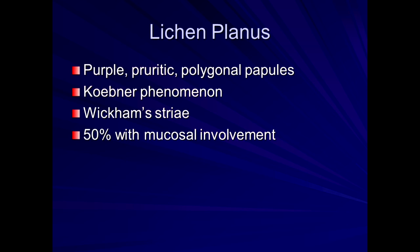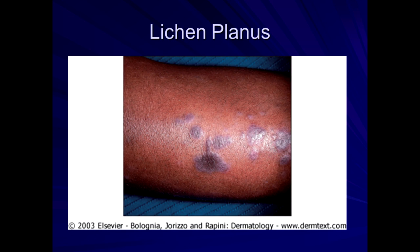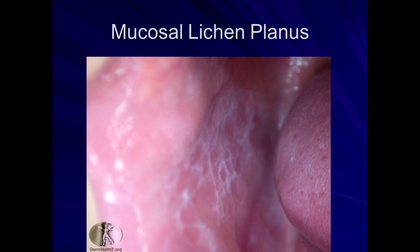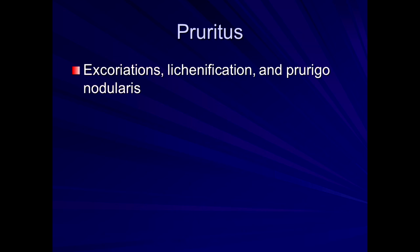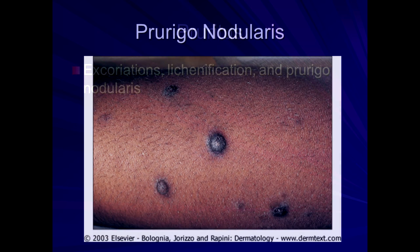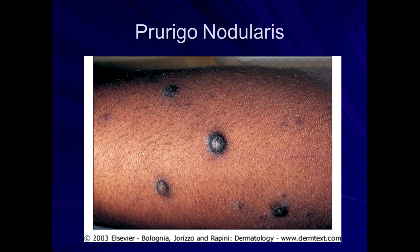Lichen planus is a very itchy condition where you get these purple-like bumps — flat-topped, puritic, purple-like lesions. Fifty percent have findings in the mouth. When I teach residents I say: when you see something on the skin, you have to look in the mouth — just like with psoriasis, you need to look at the scalp and nails too. Lichen planus also presents with Wickham's striae — lacy whitish patches inside the mouth. These patients are severely itchy. Prurigo nodularis is a nonspecific condition where cutaneous nerves become excited, causing severe itch, often on the arms and legs, and is not specific to hepatitis C.